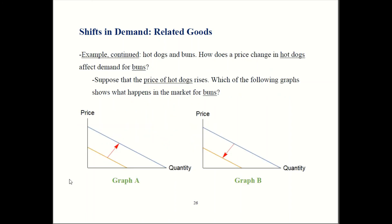Let's work through an example. Let's stick with hot dogs and hot dog buns. Let's say that hot dogs get more expensive. So when that happens, what's going to happen to the market for buns? Is demand going to shift out like in graph A, or is demand going to shift back like in graph B? Go ahead and pause the video here and think about it. When you're ready, press play and we'll talk about the answer.